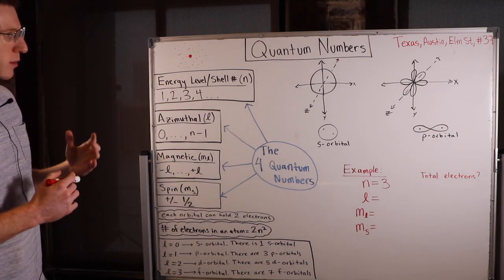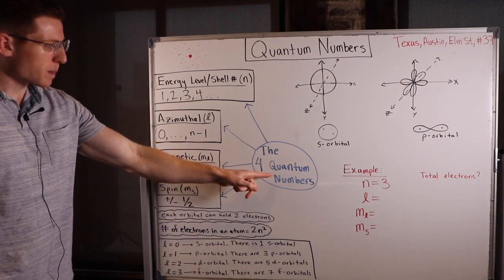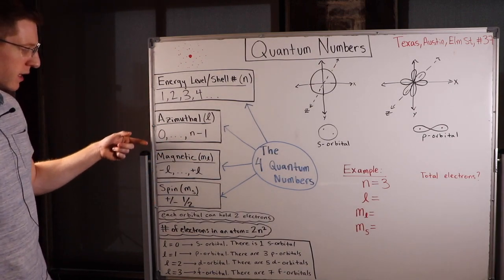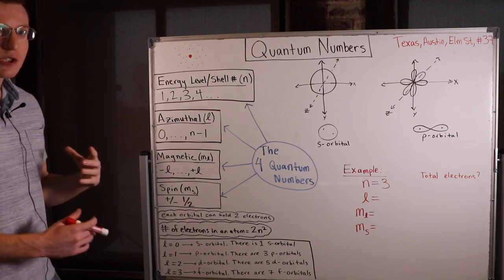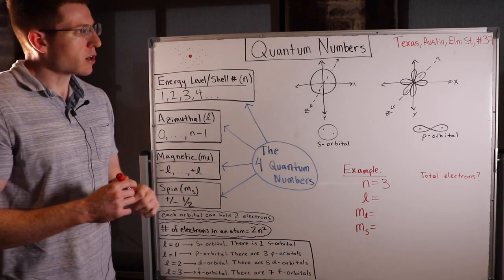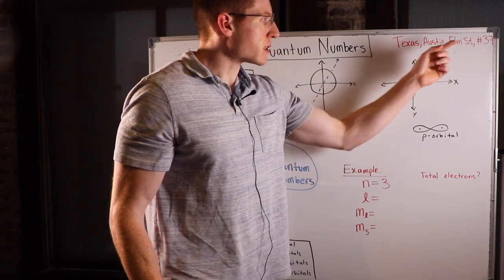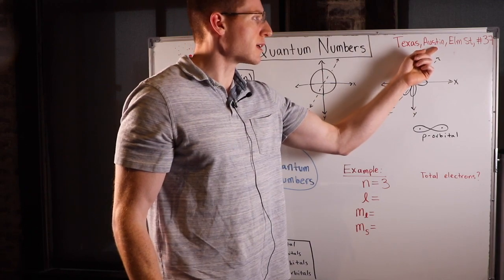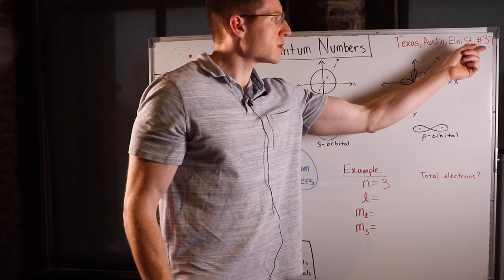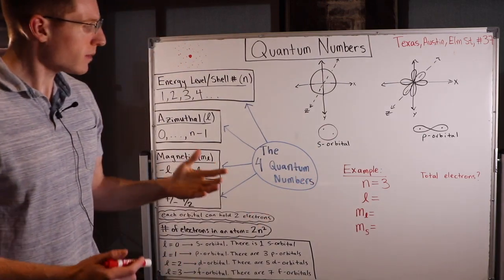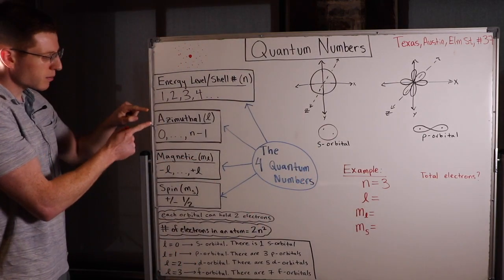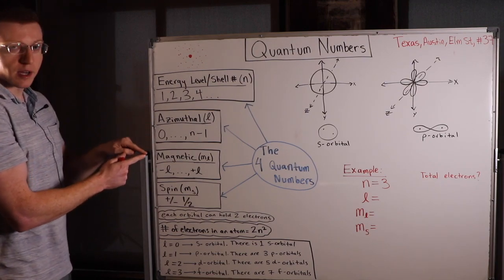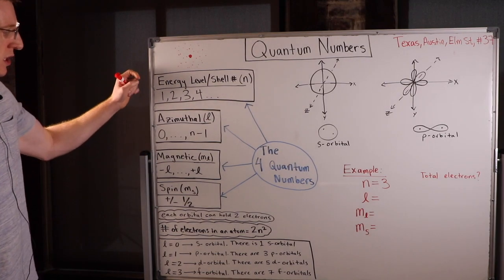The way quantum numbers work is that there are four of them, and as you go on they get more specific — they start out general and get very specific. This is just like your address: it starts off general and then gets more specific. It's like starting with Texas, then your city is Austin, then you live on Elm Street, and you live in house number 37. It becomes progressively more specific, unique, and informative as you get more information.